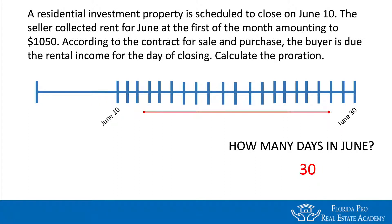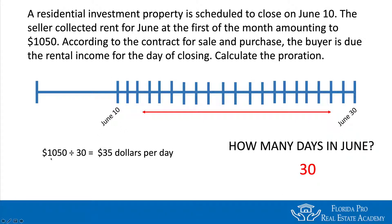We have 30 days in June and the closing date is June 10th. The buyer will receive the rent from that day forward, so on the timeline we count from the right side. First, take the total rent of $1,050 and divide by 30 — that gives us $35 per day. That's the daily cost whether for the renter, the new buyer, or anyone else.